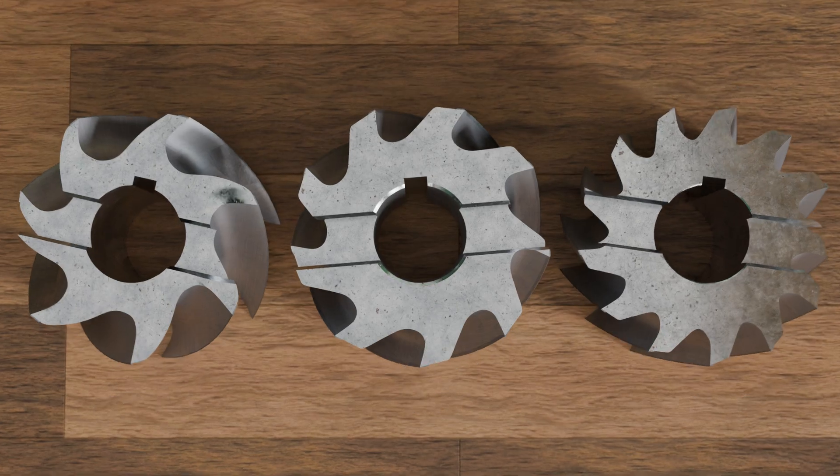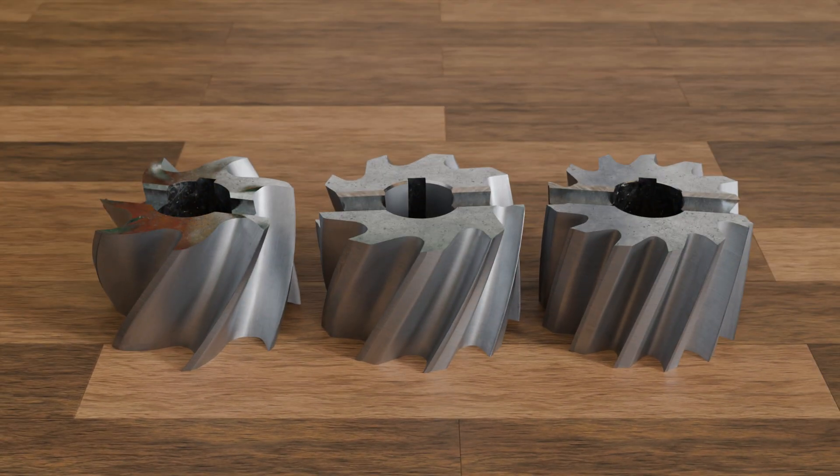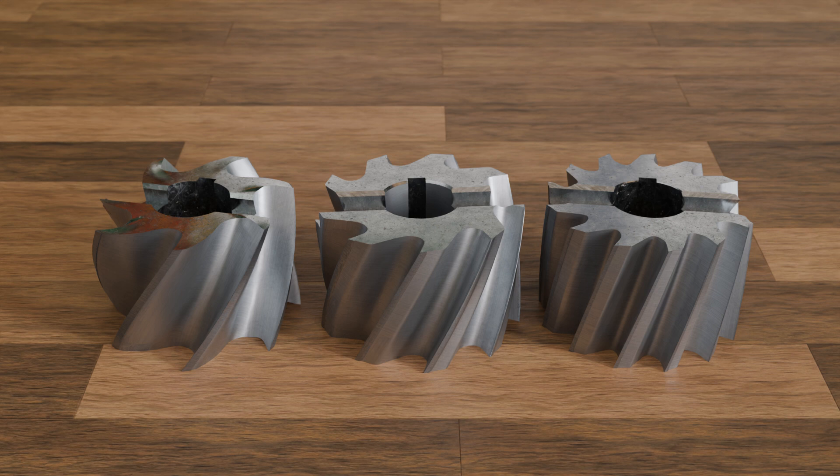When milling soft materials with a high-helix cutter, each cutting edge can remove a relatively large amount of material, meaning the feed per tooth is comparatively high. However, this also generates a significantly larger chip volume, which must be reliably evacuated. This requires larger chip flutes. For this reason, high-helix cutters feature a noticeably greater tooth pitch and therefore have fewer teeth overall than comparable low-helix cutters designed for hard materials.